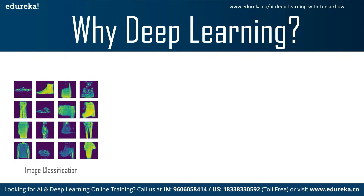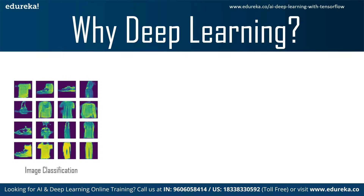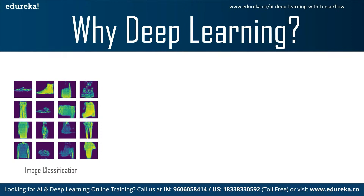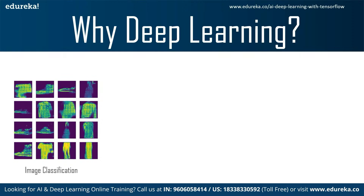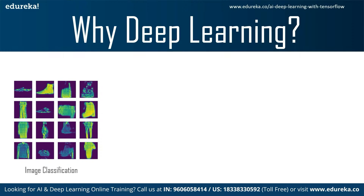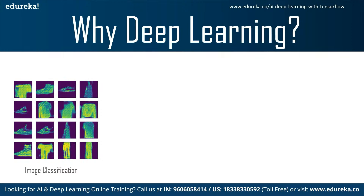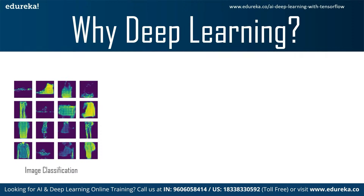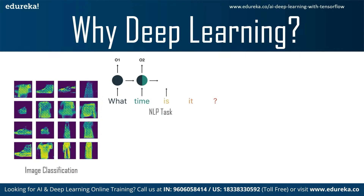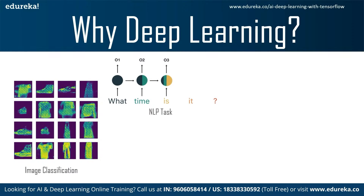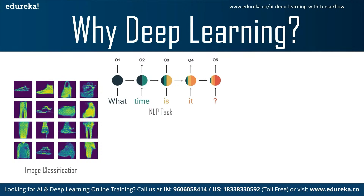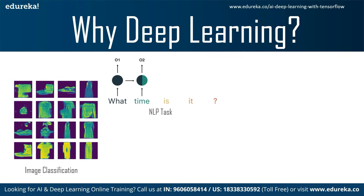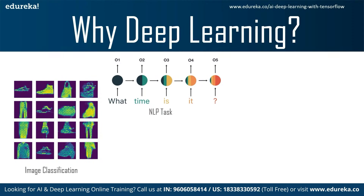One of the most popular applications of deep learning is image classification, which can range from something as simple as classifying two different animals to something as complicated as hiding data or running automated cars using classification tasks. The next type of application is using deep learning on sequential data. Sequential data basically refers to something like time series data or natural language, where the previous word or feature is dependent upon the next feature.